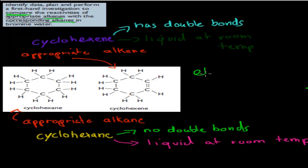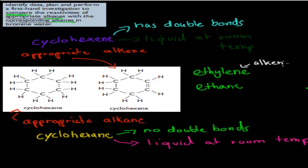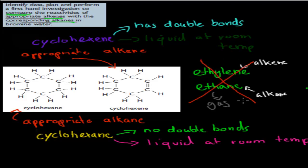And the problem with ethylene — ethylene was an alkene and ethane was an alkane. This would have been an alkene and this would be an alkane. But the reason why we can't choose them, the reason why they're not appropriate, is because both of them are gas. And if you were to put them into bromine water, they would just leave again, so they wouldn't stay. So these are not appropriate for this experiment.